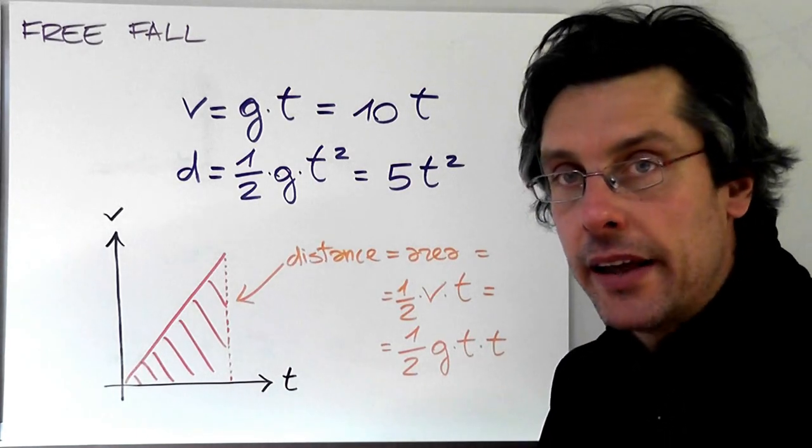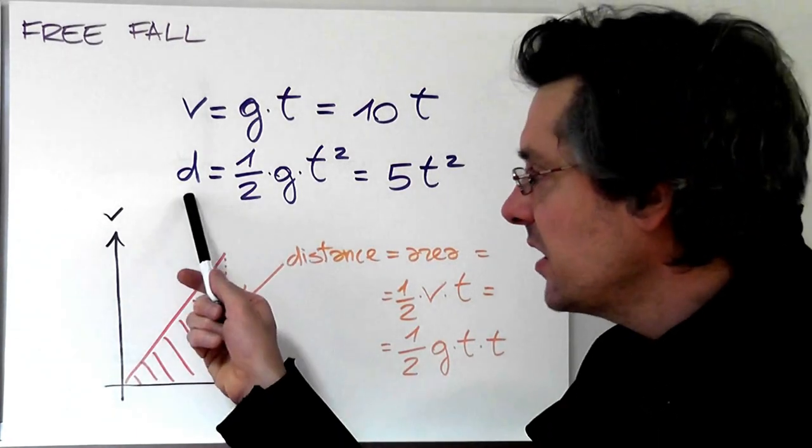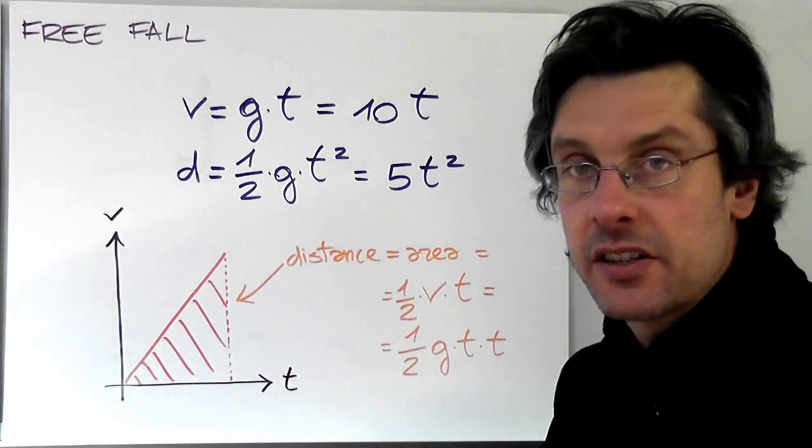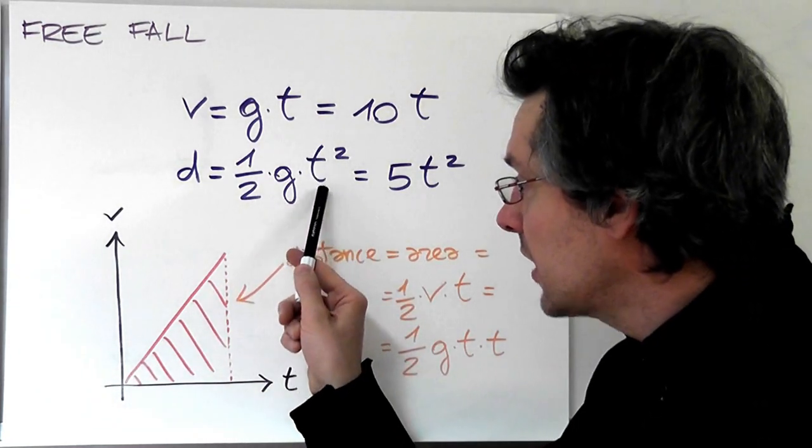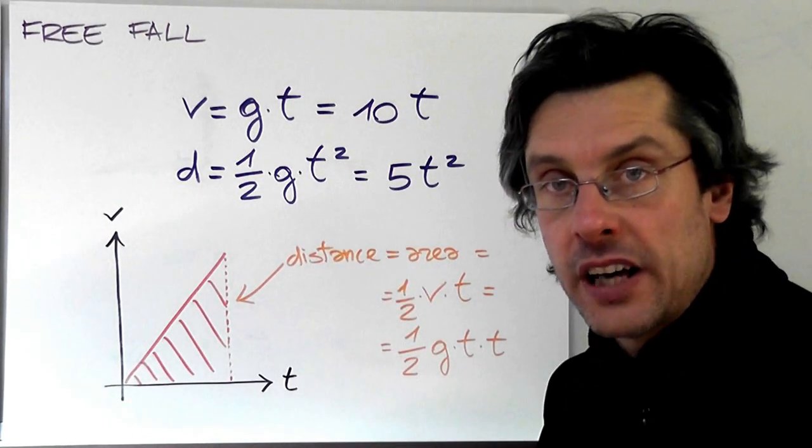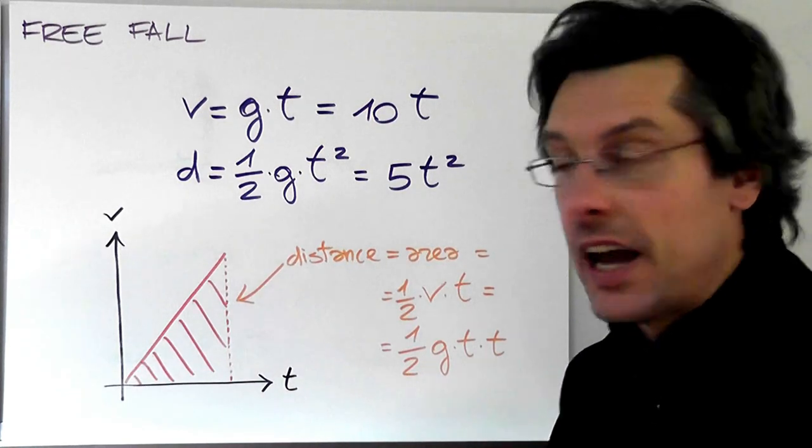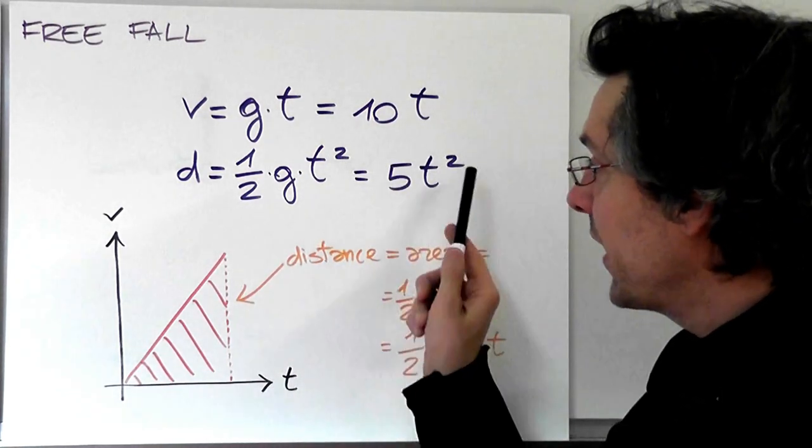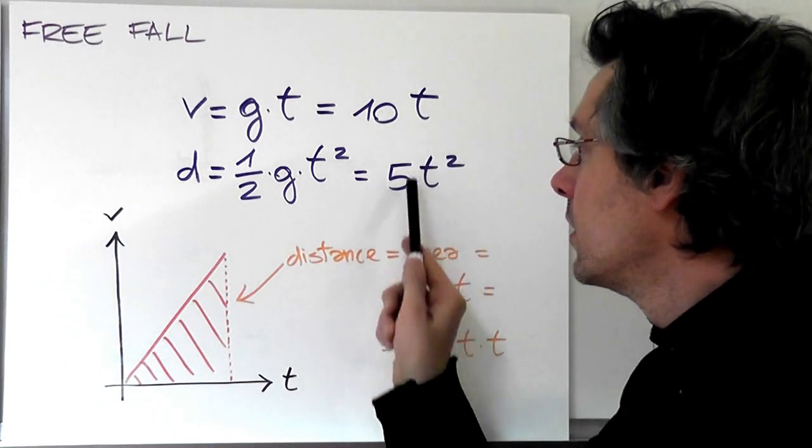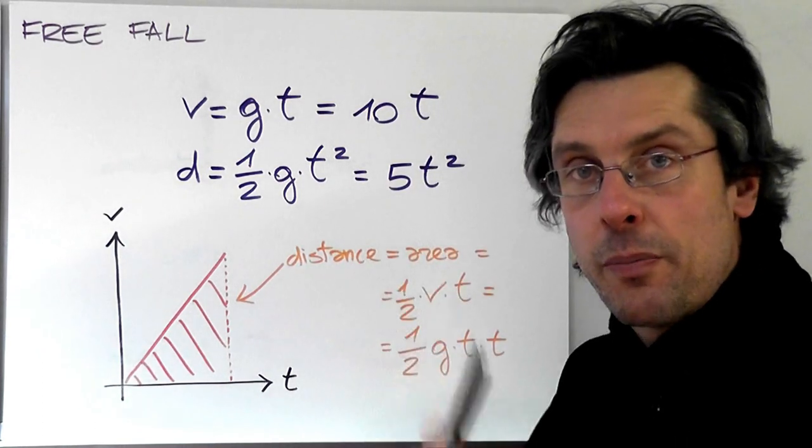In the same way, we can find out that the distance is equal to one-half times the acceleration of gravity, times the time squared. Now, since g is equal to 10, one-half of 10 is 5. So again, we can write the distance as 5 times the time to the power of 2.